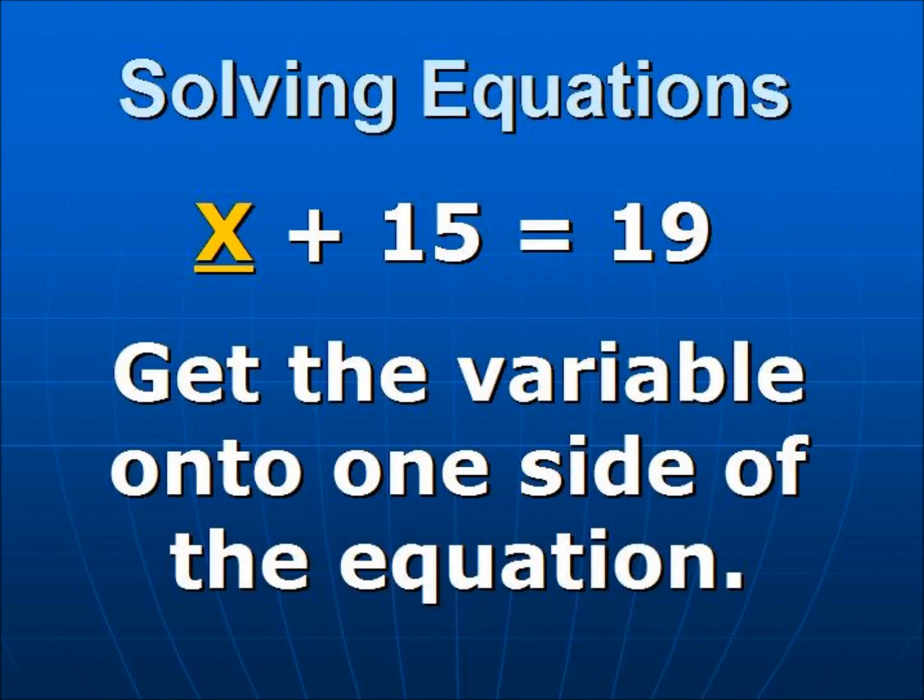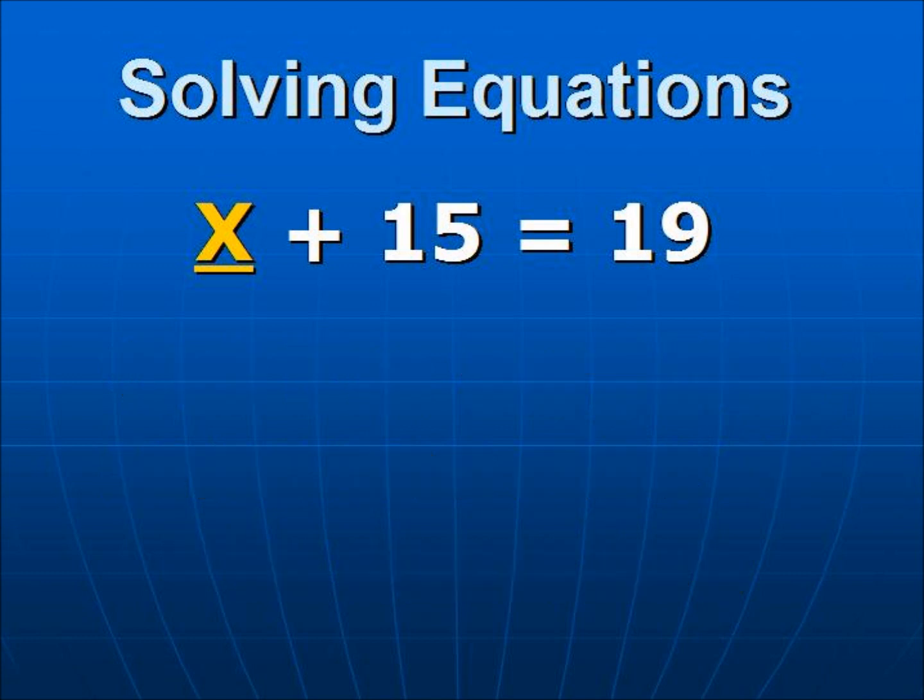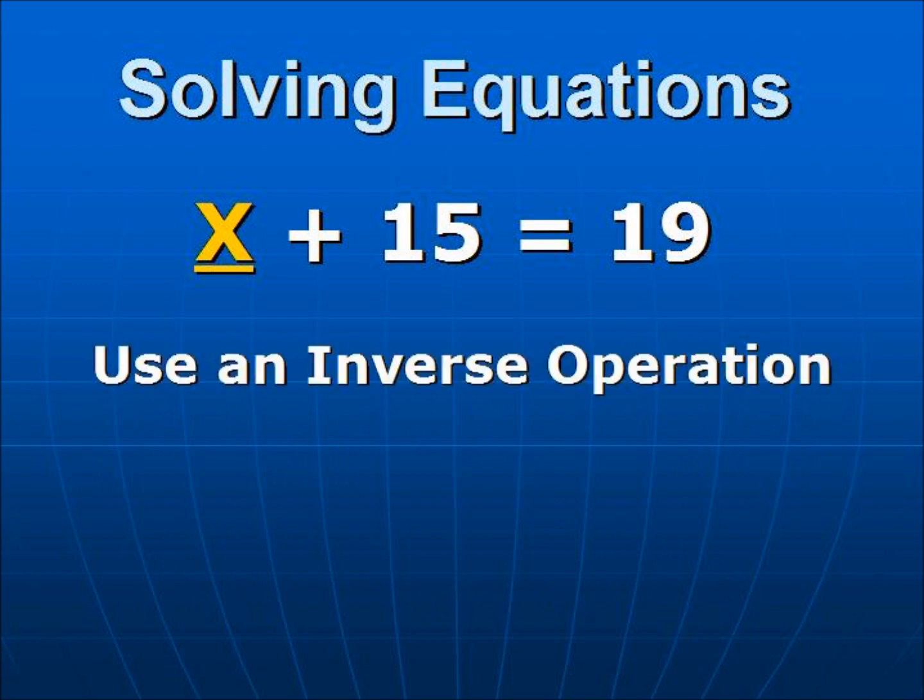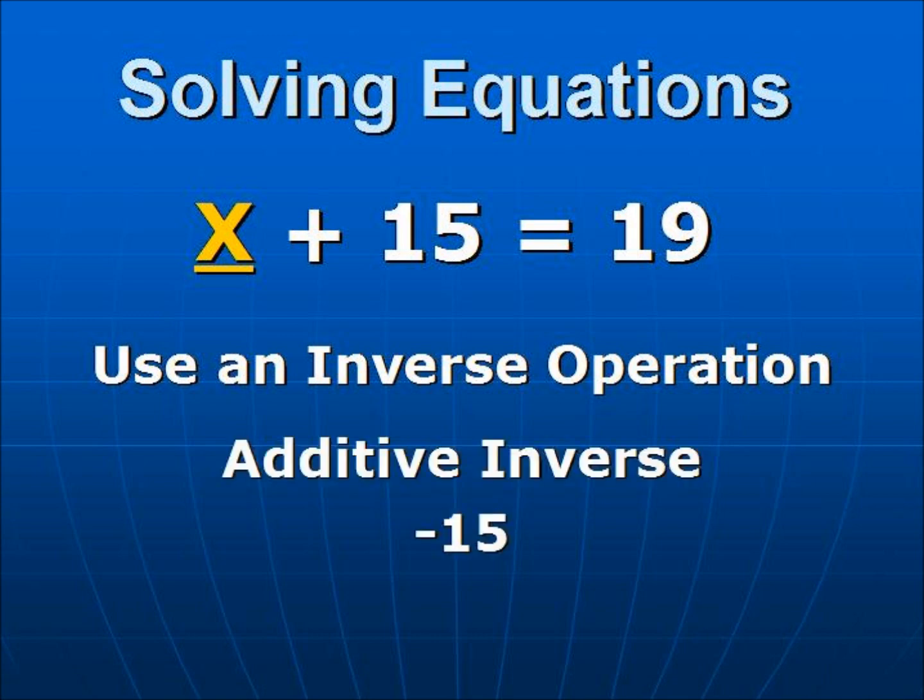We solve the equation by getting the variable onto one side of the equation by itself. Here we're going to have to remove the 15 from the X. We're going to remove the 15 by using an inverse operation. We're going to use the additive inverse. The additive inverse of 15 is negative 15.